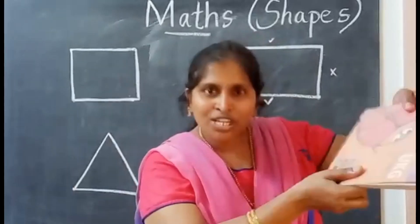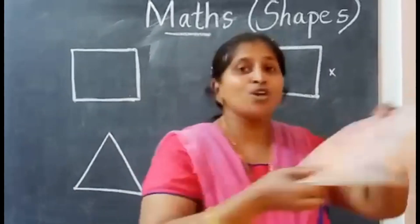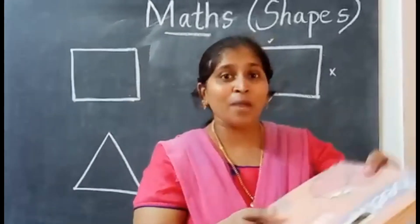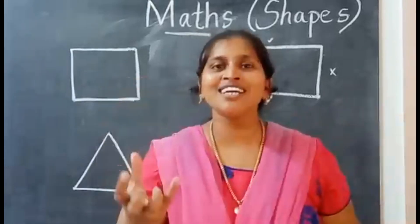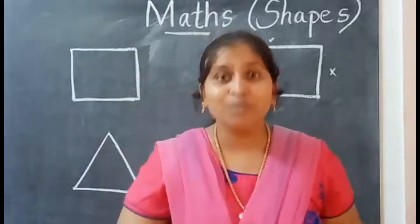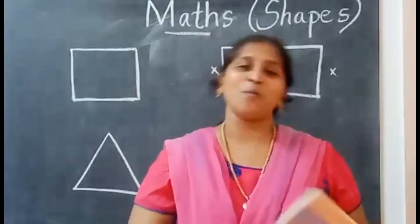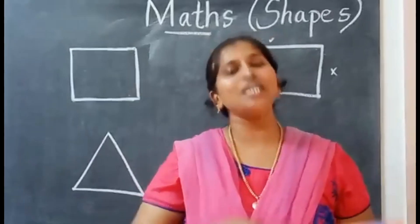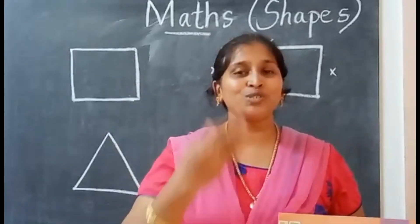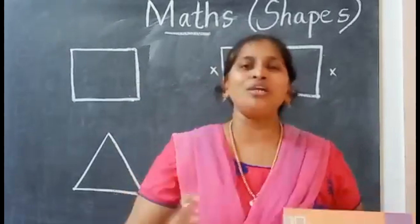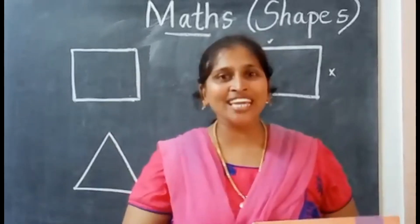Whenever you pick something up, ask your mommy what shape it is. Or you can explain to your mommy and daddy — tell them, 'This is rectangle shape, this is circle.' Your mommy and daddy will be so happy to see that you are so intelligent and bright!